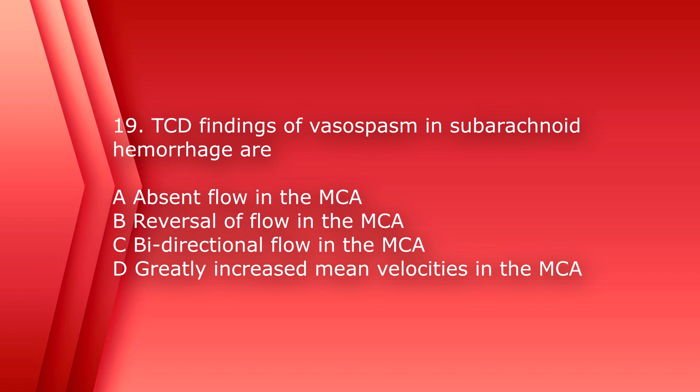Number 19. Transcranial Doppler findings of vasospasm in a subarachnoid hemorrhage are A, absent flow in the MCA, B, reversal of flow in the MCA, C, bidirectional flow in the MCA, or D, greatly increased mean velocities in the MCA.